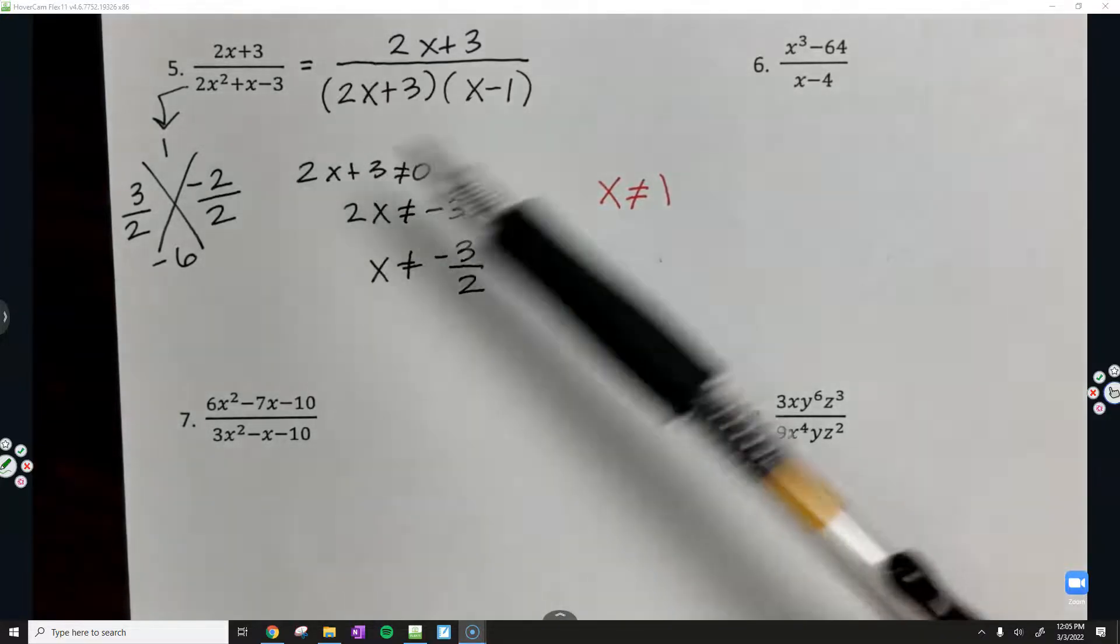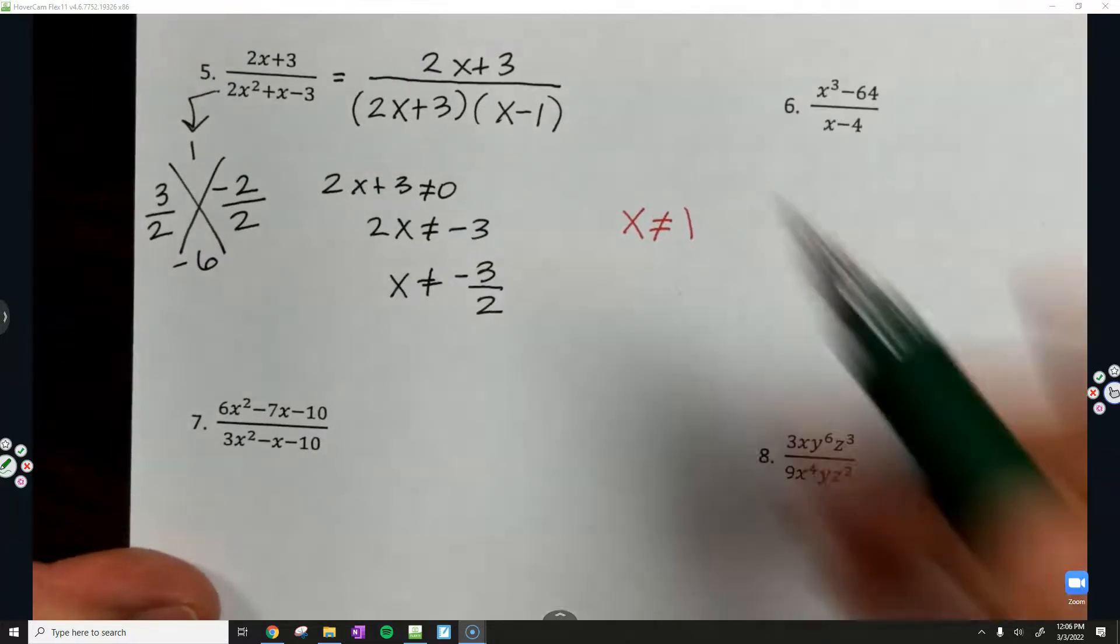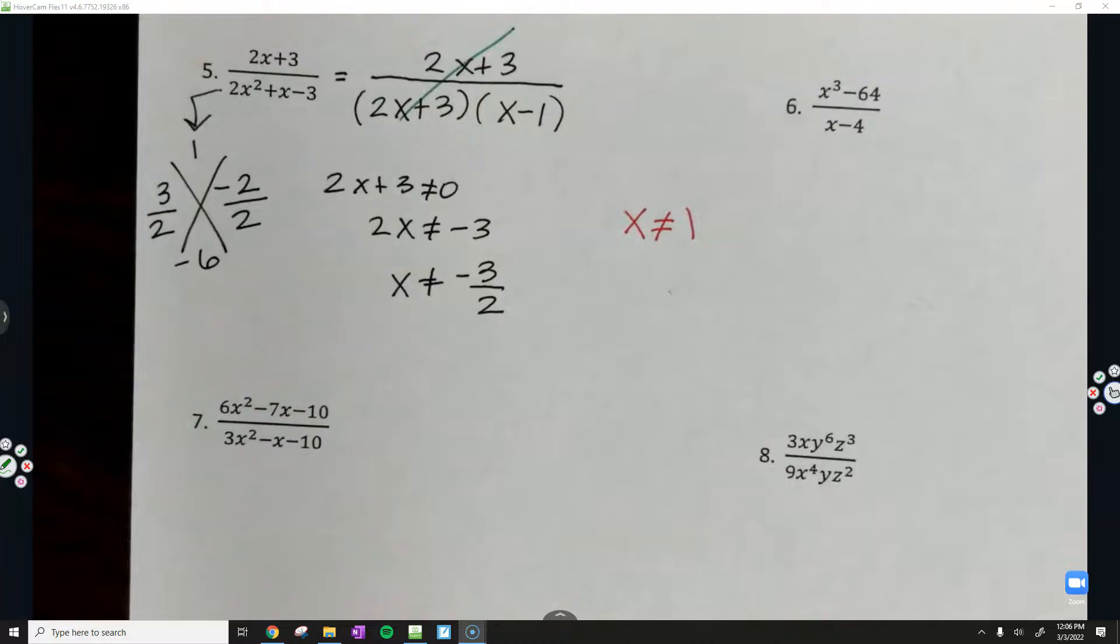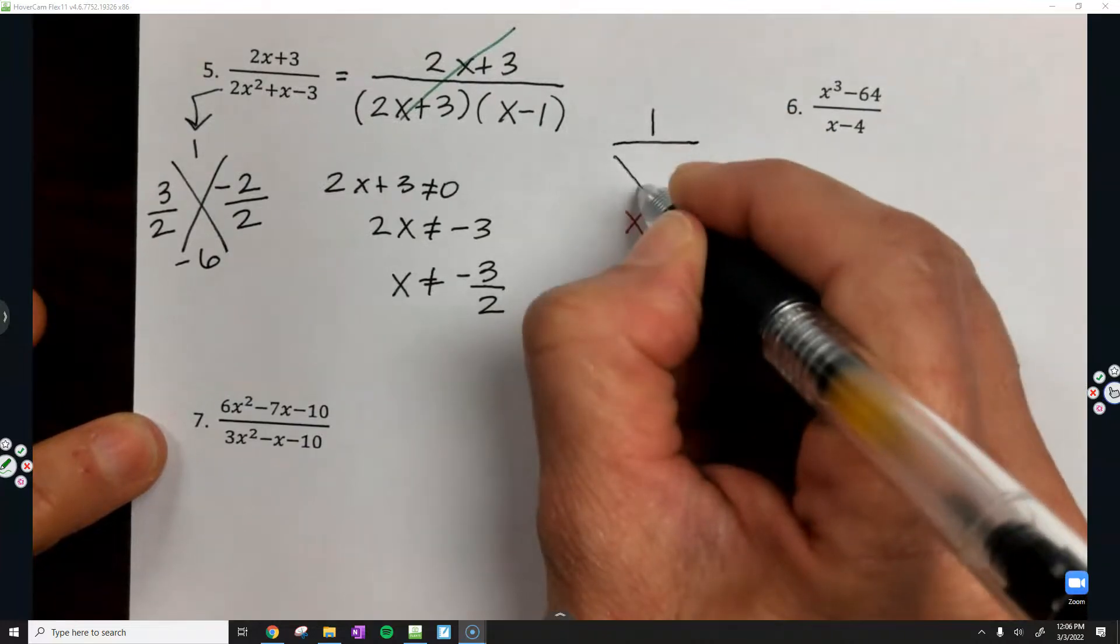All right. Back to the fraction. If you notice, we have 2x plus 3 that cancels out. When everything cancels out in the numerator, the 1 is left over. So, the simplified fraction is going to be 1 over x minus 1.